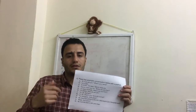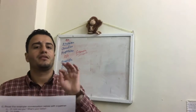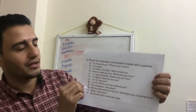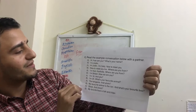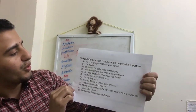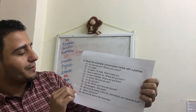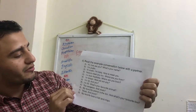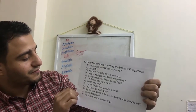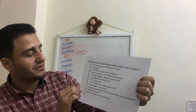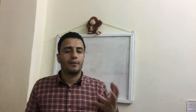Now I will read this conversation for you quickly, and then try to read it with your partner because there is an activity after that. Hi, how are you? What's your name? I'm Justin. Hi Justin, I'm Sally. Nice to meet you. Nice to meet you too. Where are you from? I'm from Australia. Where are you from? I'm British. How old are you? I'm 18. And you? I'm 20. What's your favorite animal? The kangaroo. And yours? My favorite animal is the lion. What's your favorite food? Steak. And yours? My favorite food is fish and chips.